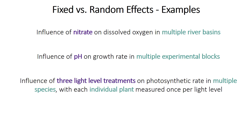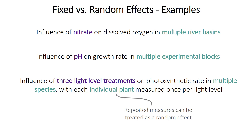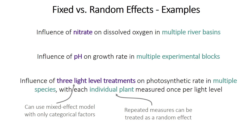Finally, in another example, we could potentially have two different levels of random effects when evaluating the effect of light level on photosynthesis. We might treat the different species in the experiment as a random effect, or it could be a fixed effect if we care about the species. We can also treat the individual plant itself as a random effect if we measured each one multiple times. Random effects are actually a useful way of dealing with repeated measures, especially as an alternative to ANOVA. Note that mixed effects models don't have to have a continuous independent variable — the linear model is a generic category, and you can have categorical factors only.